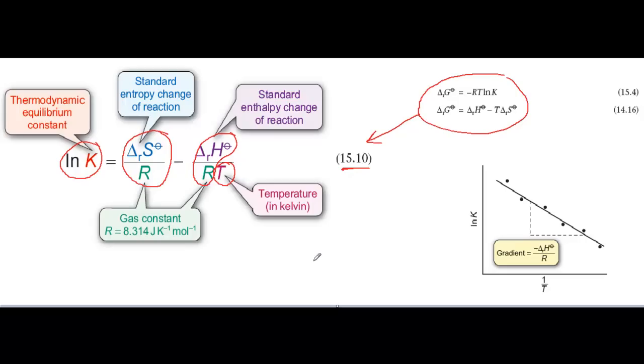So equation 15.10 agrees with Le Chatelier's principle. But we can go further and use this equation to calculate how much K changes for a given change in temperature, provided we know delta S and delta H.